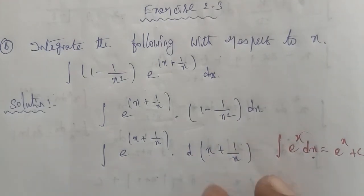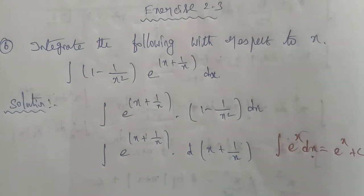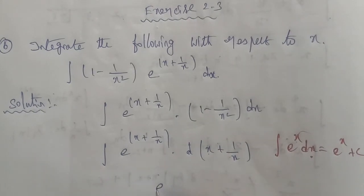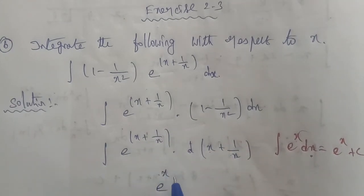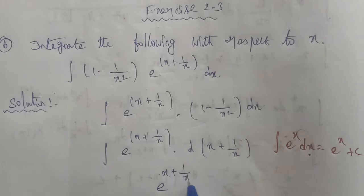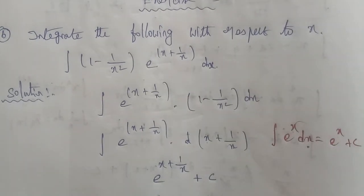The e power x format is the answer. The answer is e power of (x plus 1 by x) plus constant c. This is the answer.